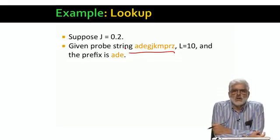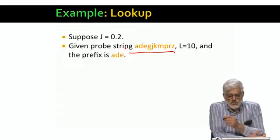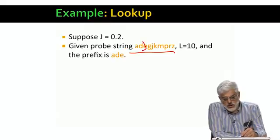And how long is its prefix? Well, JL is 0.2 times 10 or 2. Add 1 and take the floor and you get 3. That is, the prefix is ADE.